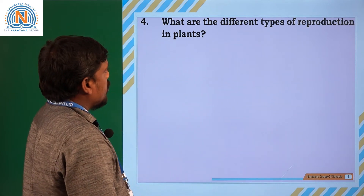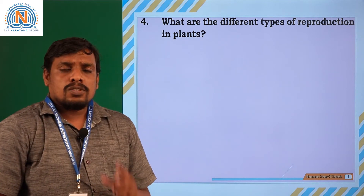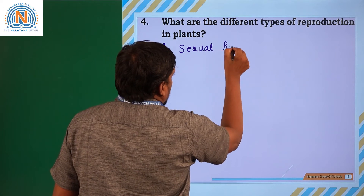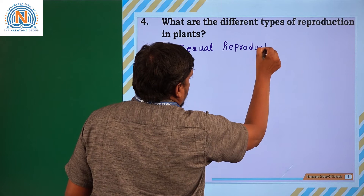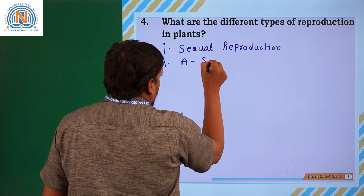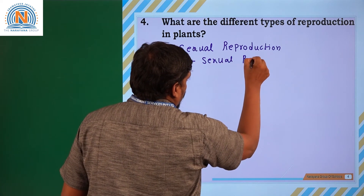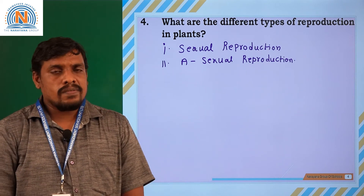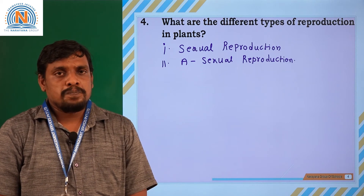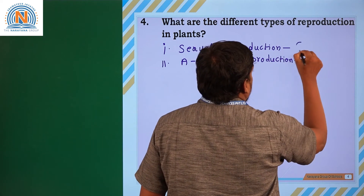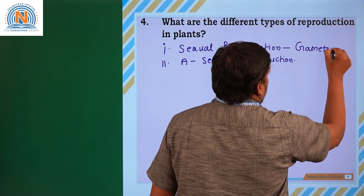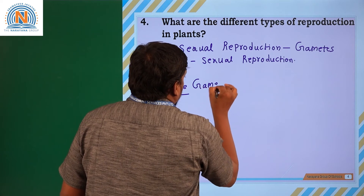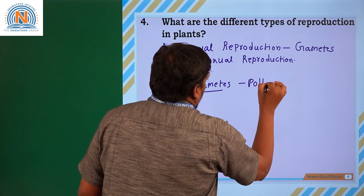The next question: what are the different types of reproduction in plants? There are two different types: one is sexual reproduction, and the second is asexual reproduction. Based on the presence or absence of gametes, reproduction is classified into two types. Sexual reproduction takes place by gametes — male gametes and female gametes. In plants, pollen grains are considered male gametes.